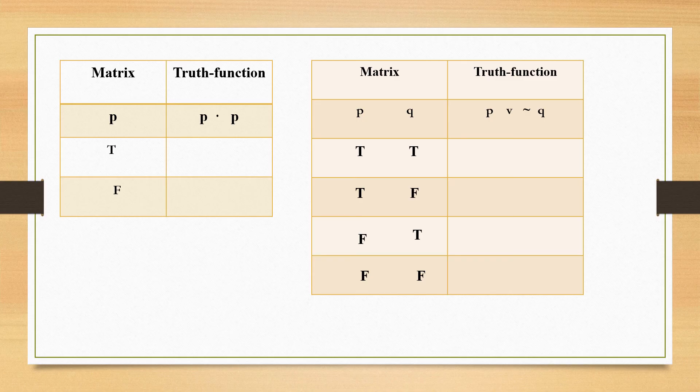In the first case, there is only one propositional variable, and the number of rows is 2, so half of 2 is 1 — you divide the truth values equally: 1 true and 1 false. If there are two propositional variables, rows are 4; in the first column under P, you write 2 trues and 2 falses. In the second column under Q, half of 2 is 1, so 1 true and 1 false. Always go on halving the truth values for each successive column.